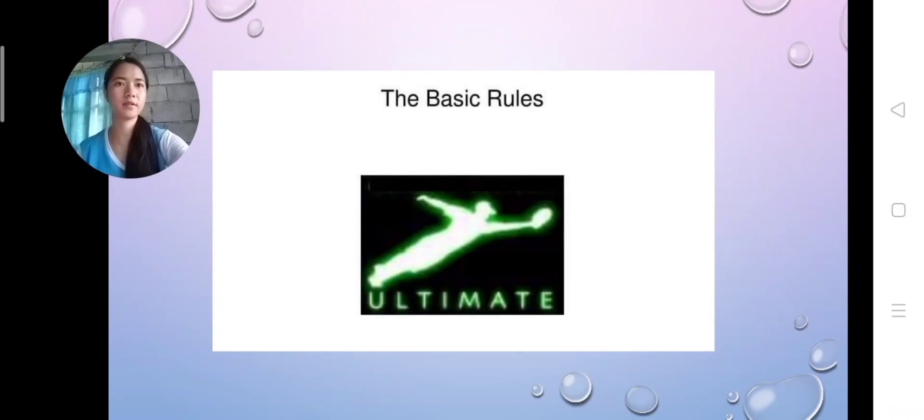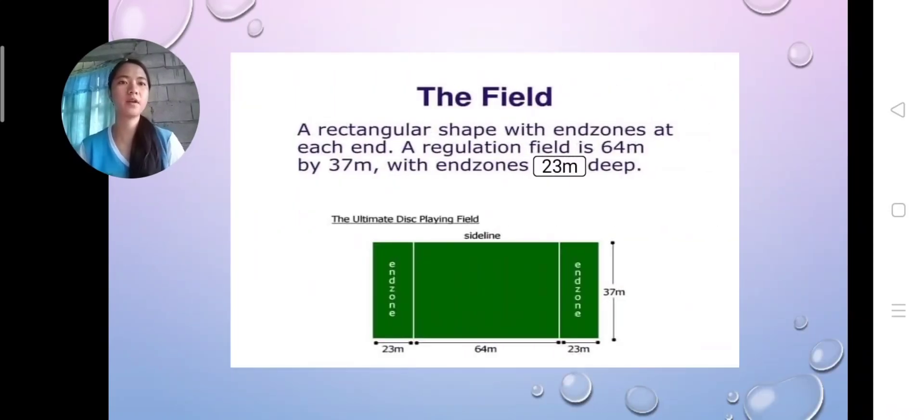The basic rules in Frisbee. The field of Frisbee is a rectangular shape with end zones at each end. A regulation field is 64 meters by 37 meters, with end zones 23 meters deep.